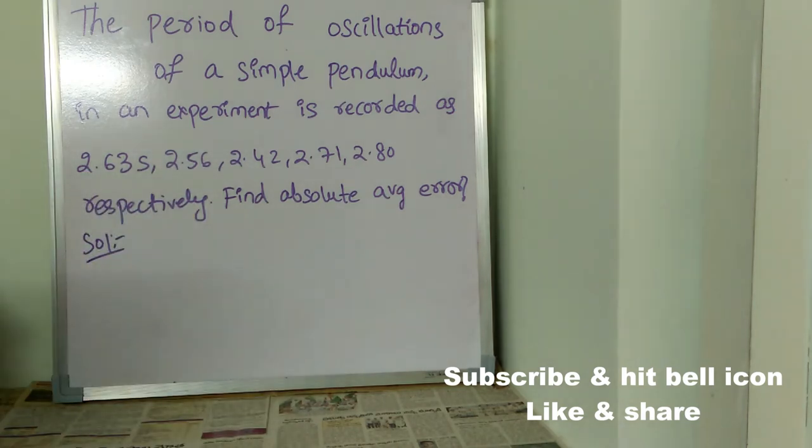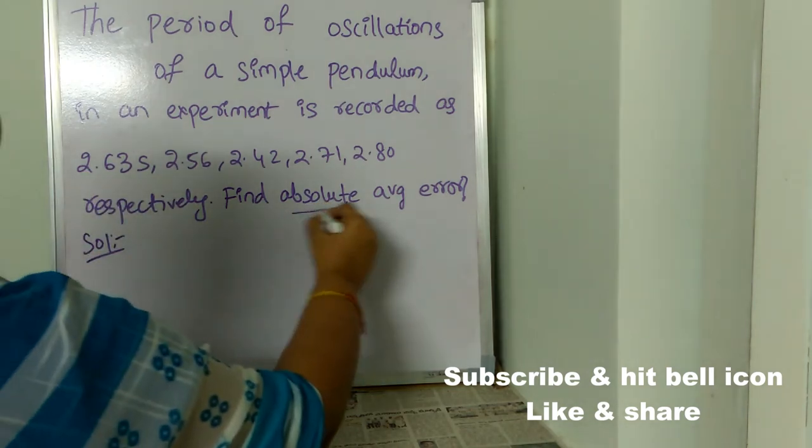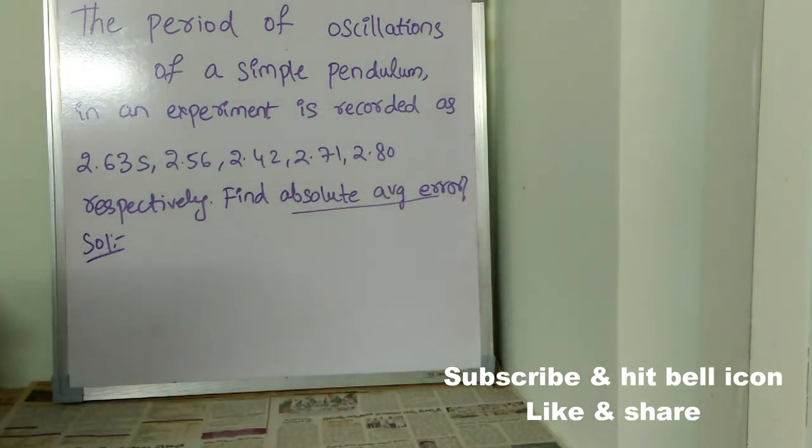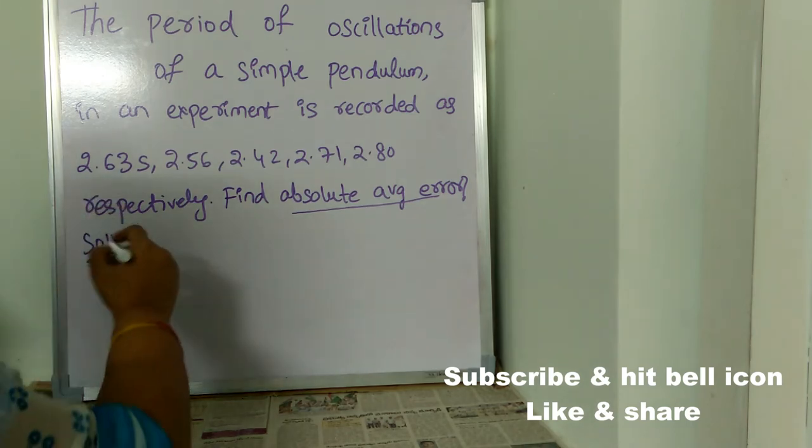What are they asking us to find? Absolute average error. See, in this question only, they are clearly giving hint that first we need to find the average value. So, now let's see how to find the average value.